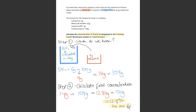To calculate the final concentration, we need to get grams per 100. 14 grams in 109 gives 12.84 grams in 100. So it's 12.8% to one decimal place.